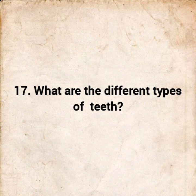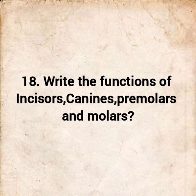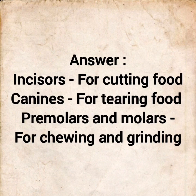Question 17: What are the different types of teeth? Answer: Four types of teeth — incisors, canines, pre-molars, and molars. Question 18: Write the functions of incisors, canines, pre-molars and molars. Answer: Incisors for cutting food. Canines for tearing food. Pre-molars and molars for chewing and grinding.